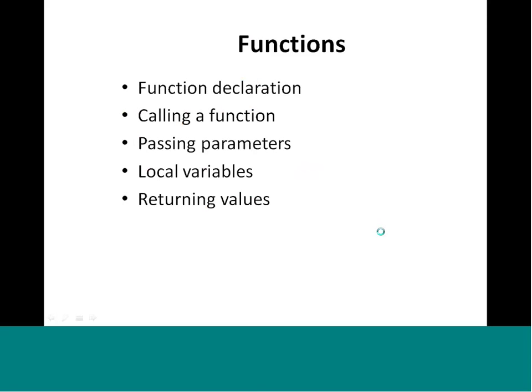We talked about function declaration, how to call a function, passing parameters, local variables, and returning values. These are the main things we covered, and I hope you have already understood them. Today's session is largely a recap, but there will be a few more items covered — specifically the control structures that we talked about briefly when we addressed data structures. Here we will be more formally talking about how control structures work and what the different control structures are.